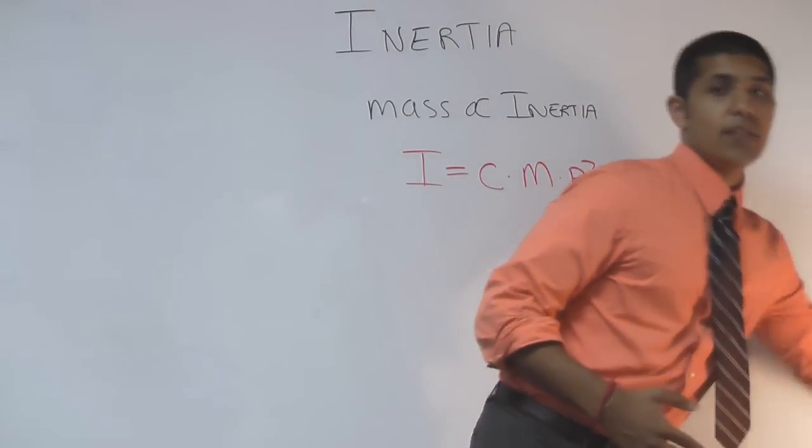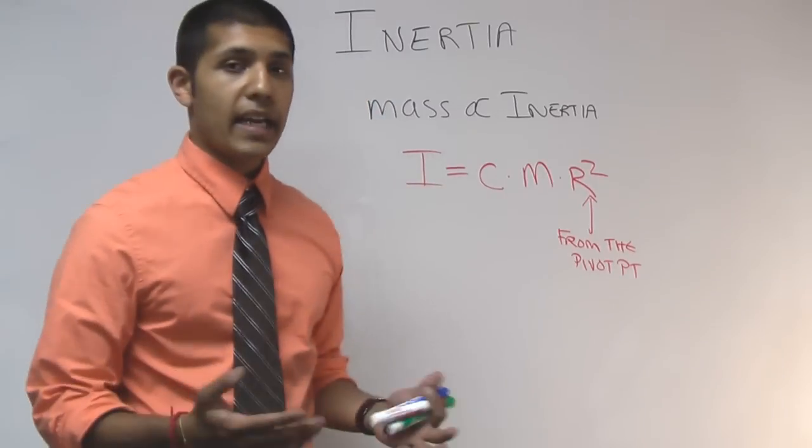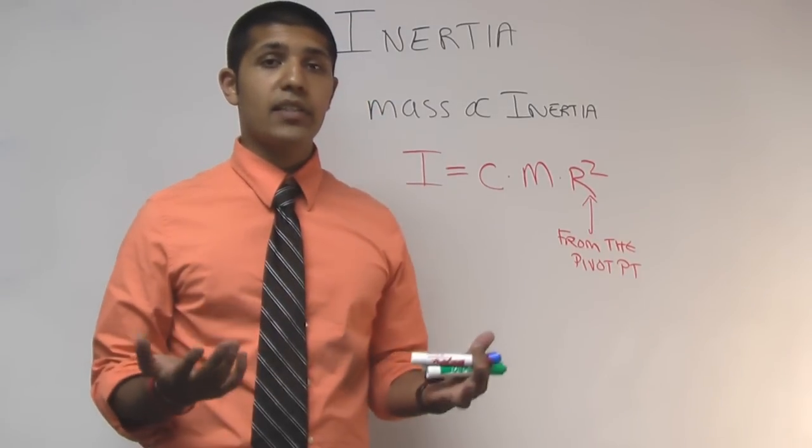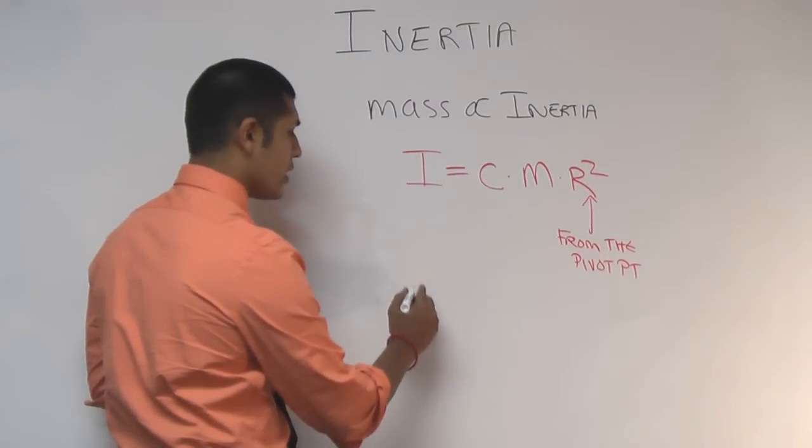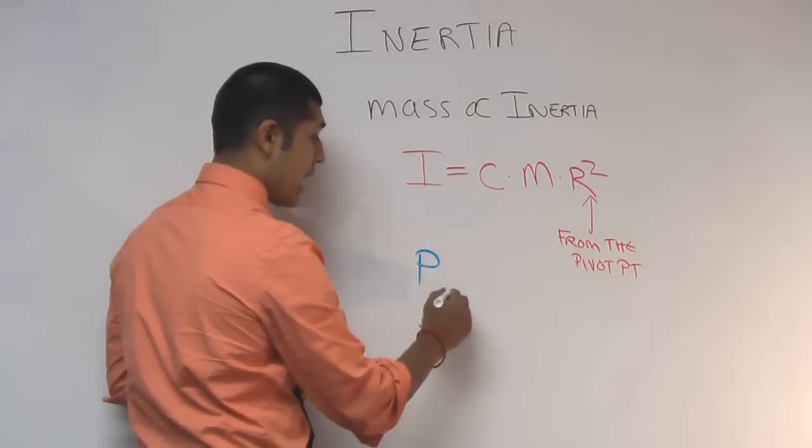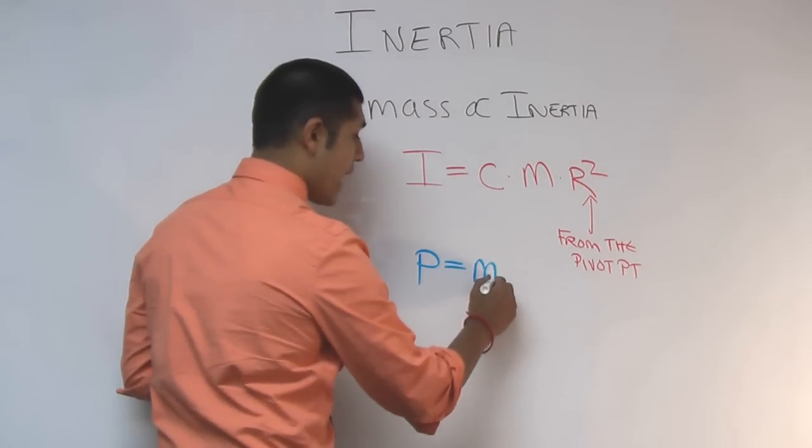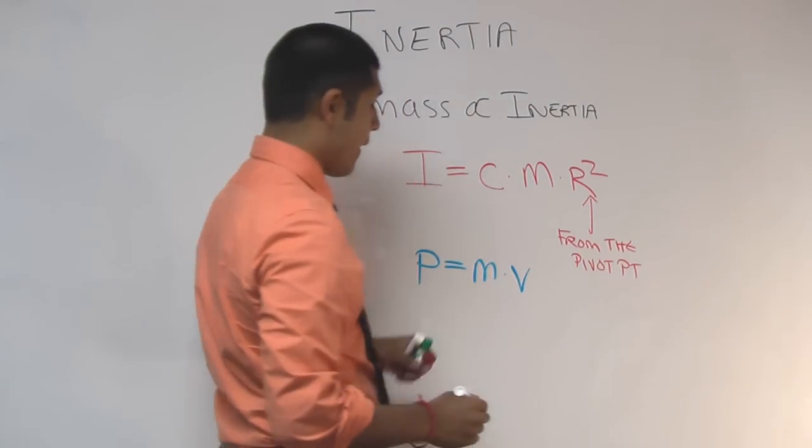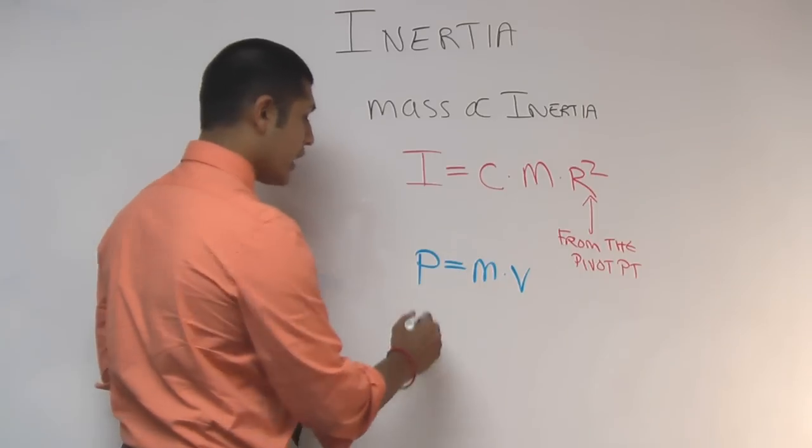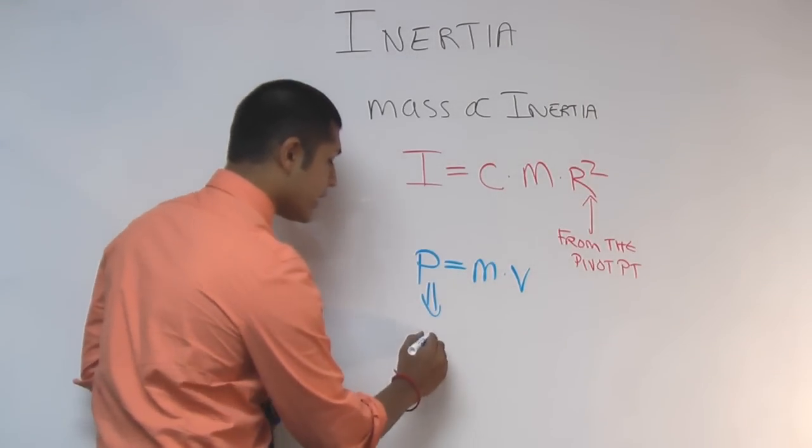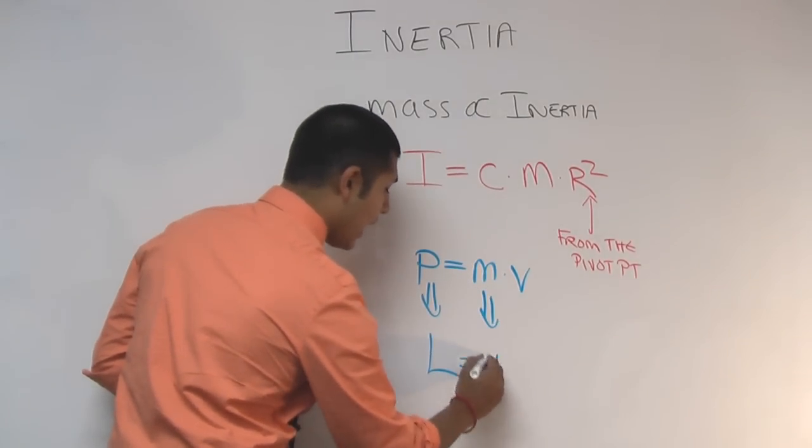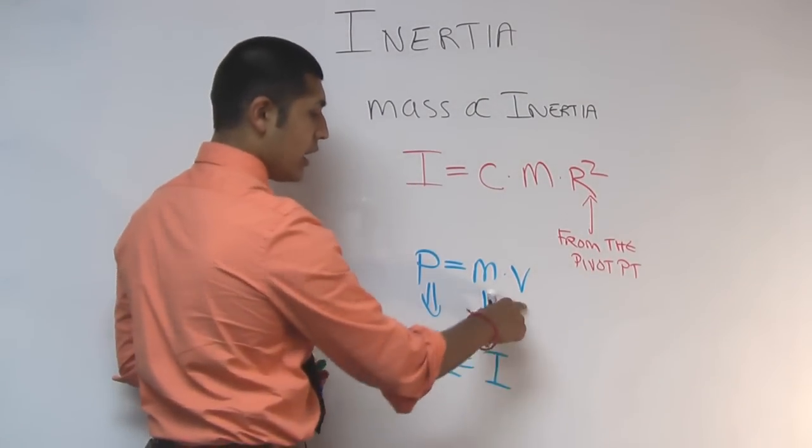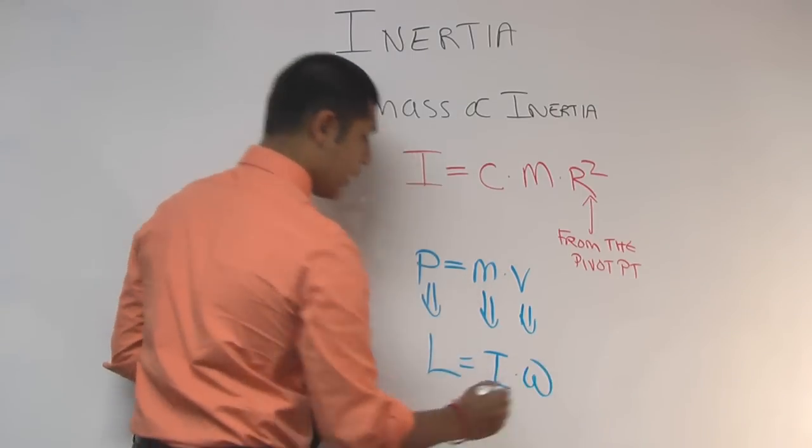Now another way for us to look at that is understanding the conservation of momentum. The conservation of momentum equation in the linear world is written as P equals mass times velocity. Well, in the rotational world, the equivalent to momentum is L, the equivalent to mass is I, which is your inertia, and the equivalent to velocity is omega.